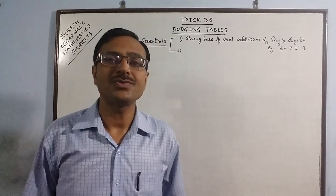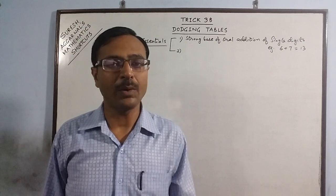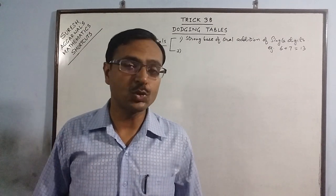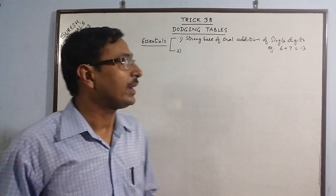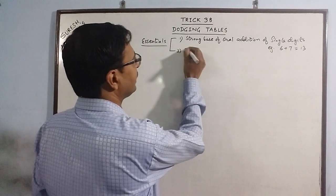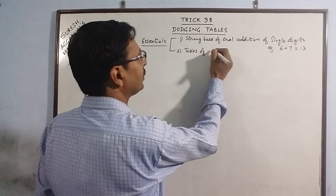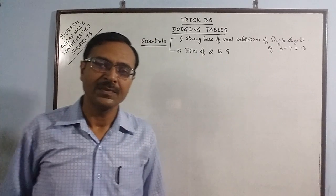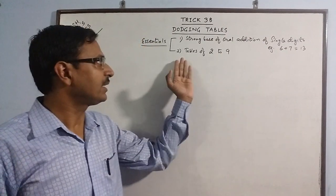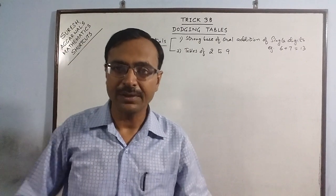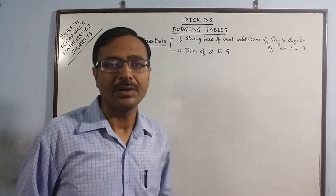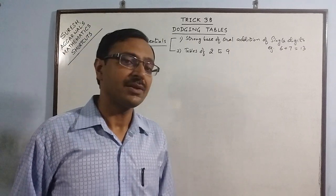Parents, work on your child's oral addition from age 4 onwards, and keep working for the next 2 or 3 years. The second essential is the tables of 2 to 9, single digit numbers. If the child has comfort dealing with single digit tables and adding single digits together, this is sufficient for enabling him to write any product from the table of any 2-digit number up to 30.